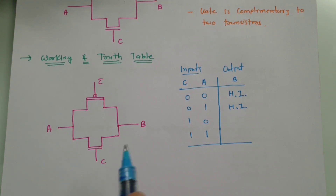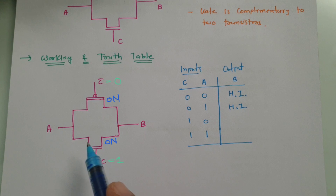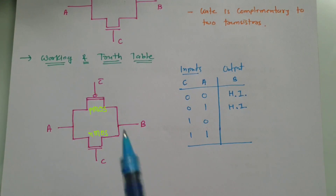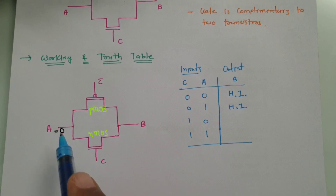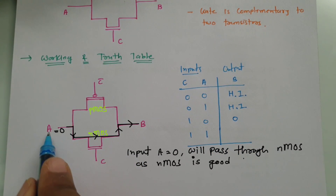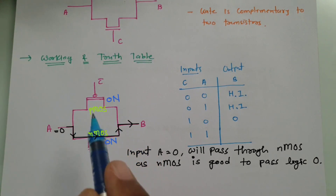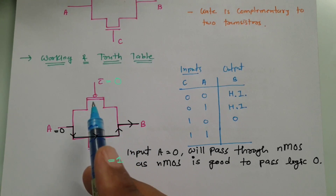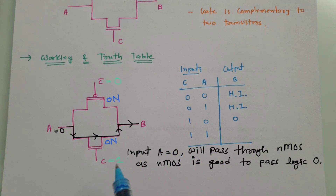Now let us have C equals to 1. When C is 1, C-bar will be 0. So this NMOS will be on as well as this PMOS will be on. If input A is 0, that 0 will pass through this NMOS to the output, so output will get 0. The reason is NMOS is good to pass logic 0 and PMOS is good to pass logic 1. When C is 1 and A is 0, C is 1 and C-bar is 0.